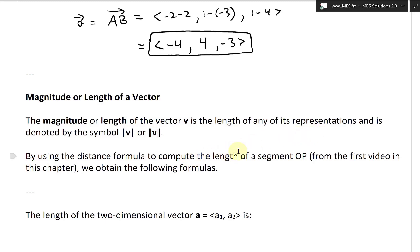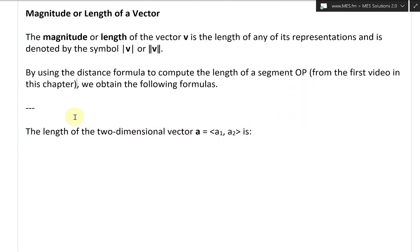From that first video, we went over the proofs for the three-dimensional one and also two-dimensional and so on. So the length of the two-dimensional vector a equals to, this vector a with components a1, a2, is